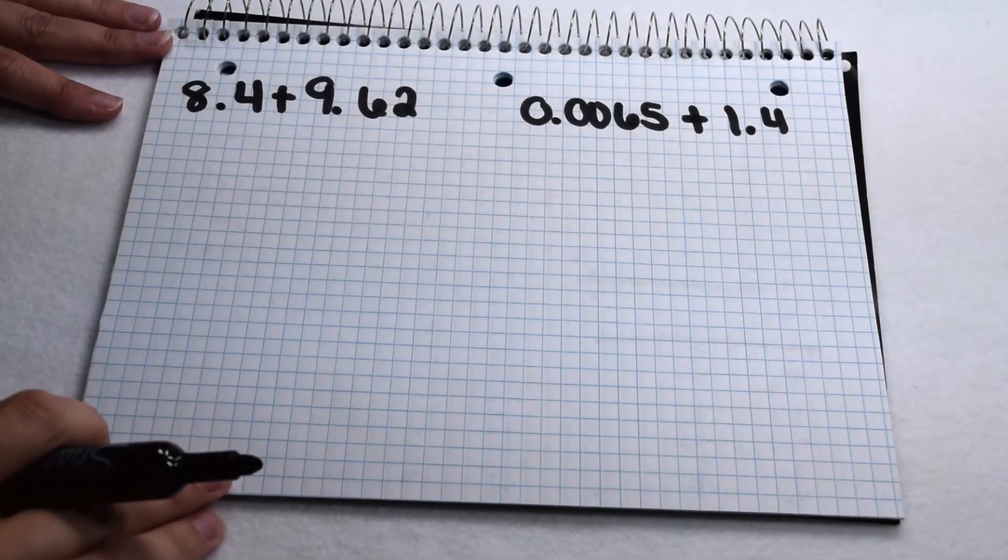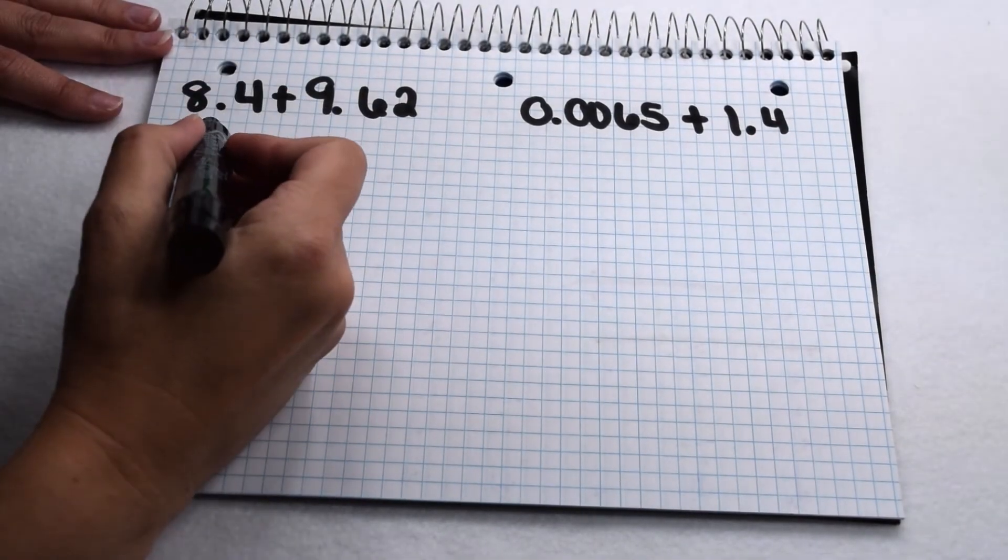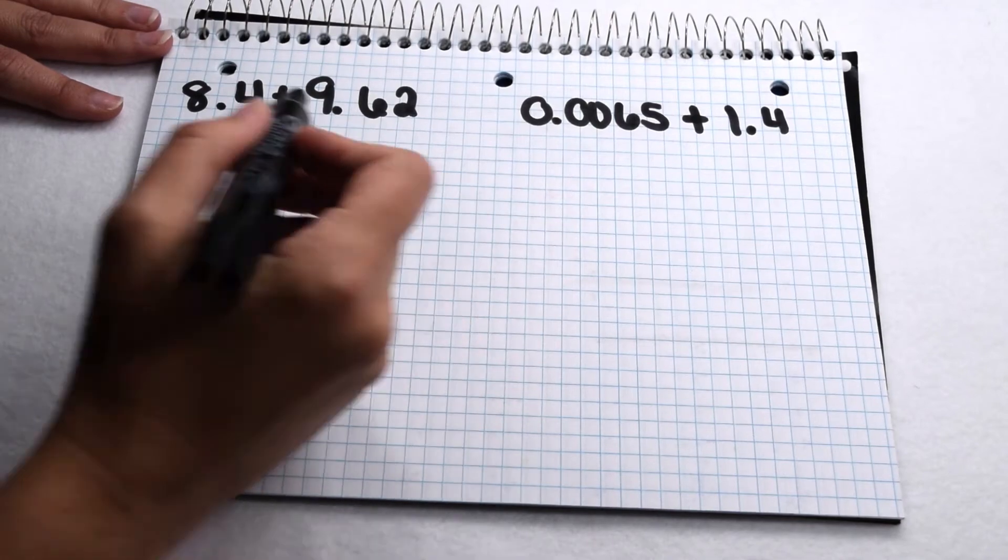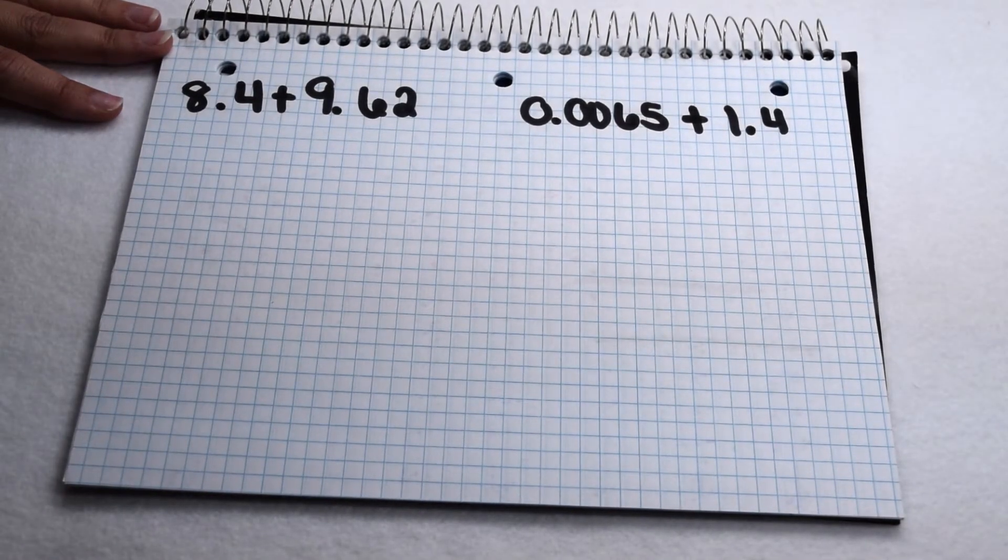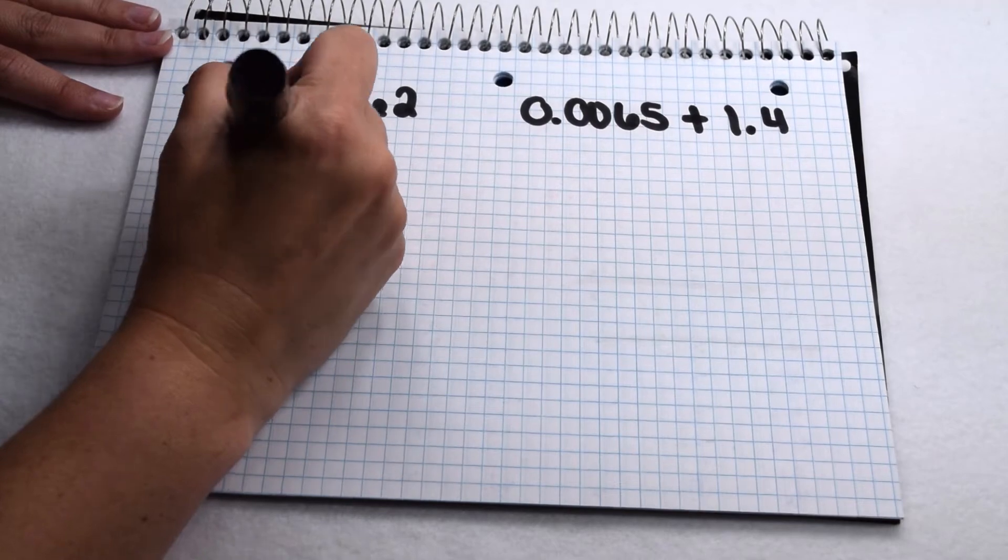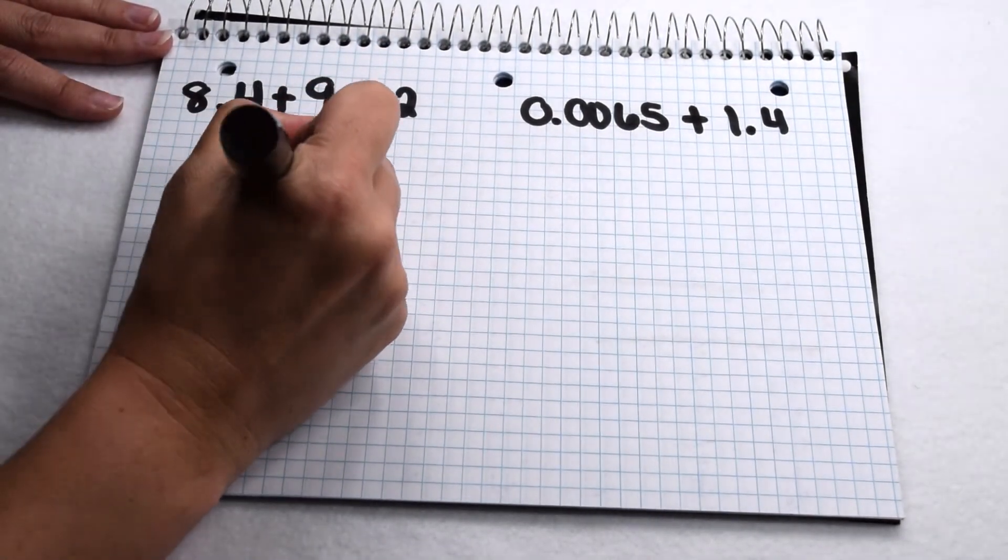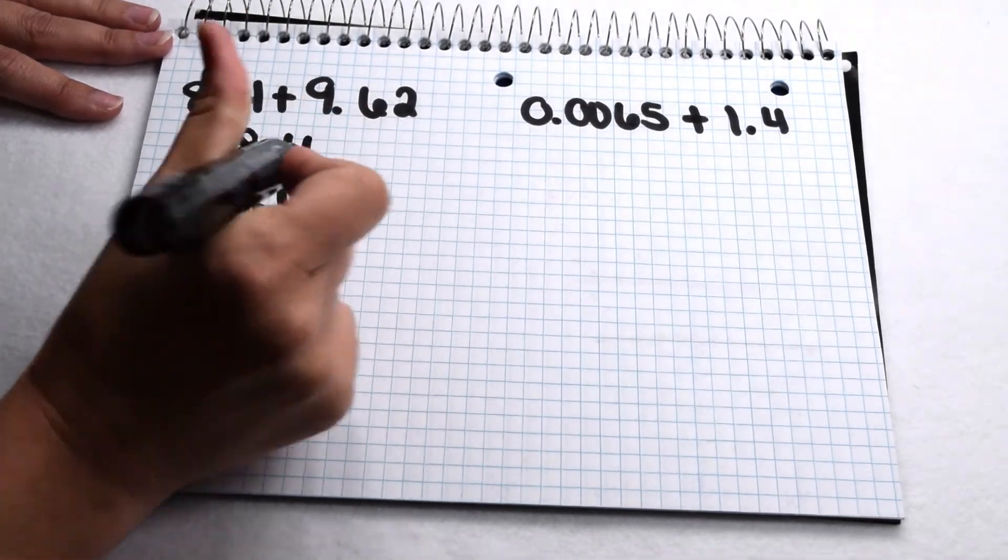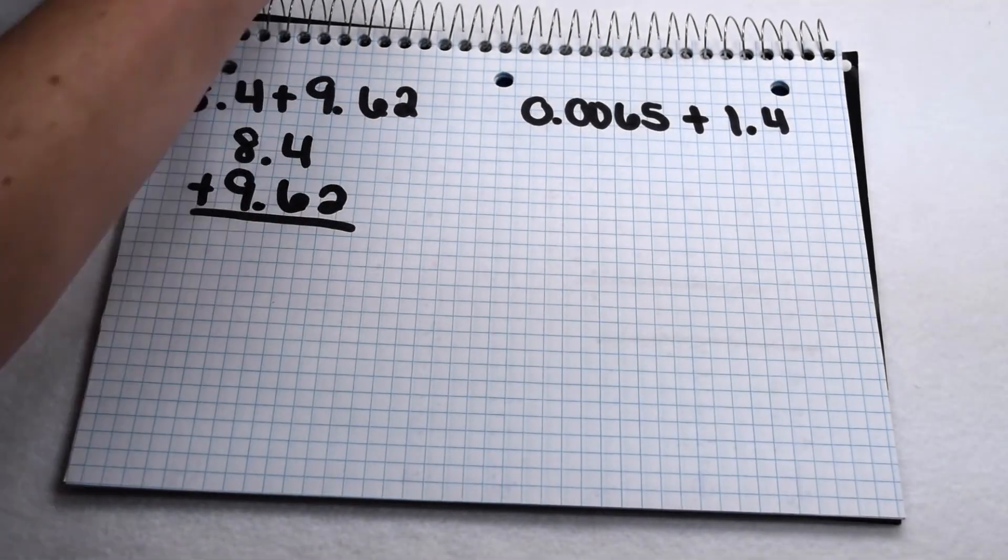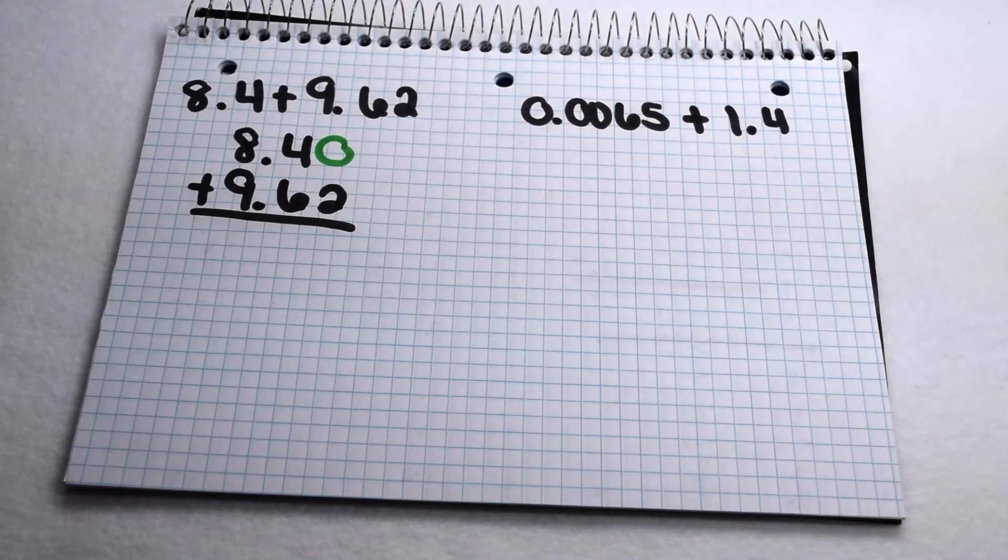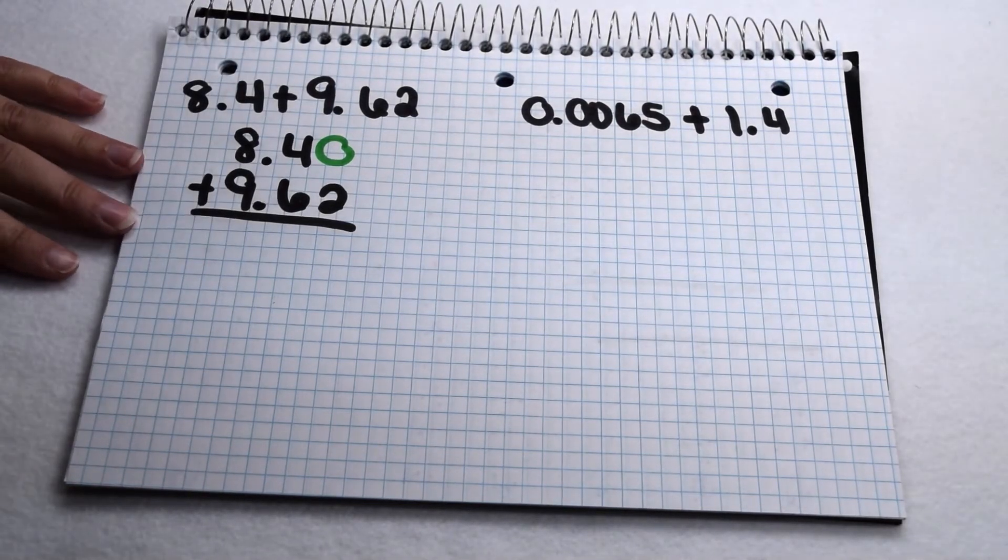We don't need to always use money in order to add with decimals. Here we have 8 and 4 tenths plus 9 and 62 hundredths. When we add up these two values, the most important thing we need to pay attention to is lining up our place values. So here we have 8 and 4 tenths, and to that we would add 9 and 62 hundredths. We can see there's a spot up here that doesn't have a value in it. That's where I can fill in my placeholder 0. Now that we've done that, we can go ahead and add like normal.